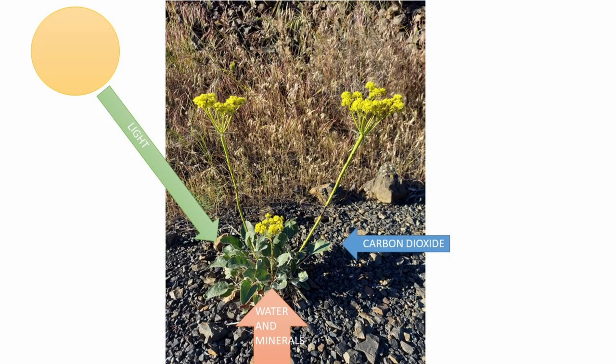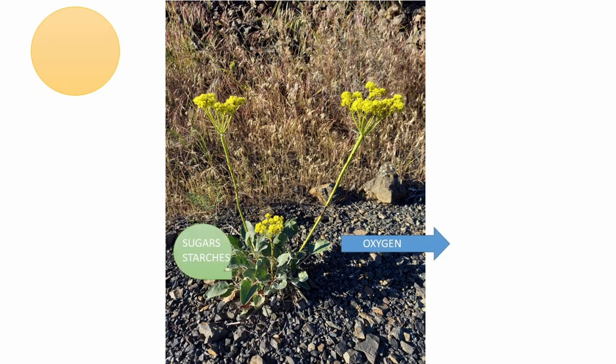Photosynthesis is a chemical process in which light, carbon dioxide, and water are absorbed or taken up by a plant and processed to create energy or food for a plant in the form of sugars and starches. At the same time, oxygen gas is produced as a byproduct of this process.